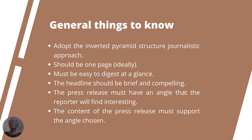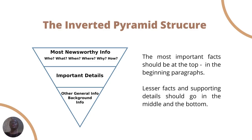Let's talk about the inverted pyramid structure, which journalists use. The diagram shows that your most important information comes first, answering who, what, when, where, why, and how. The next layer is the important details to support what came before, and then other general, less important details can go at the end. The idea is that when people start reading, they get the crux of the matter immediately.